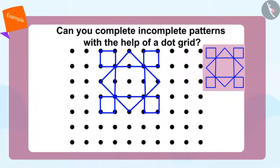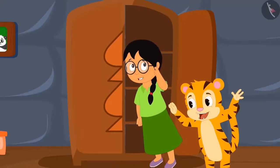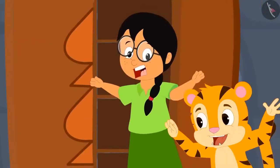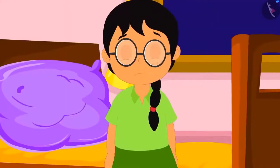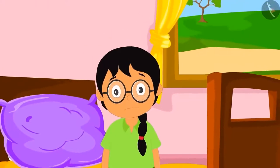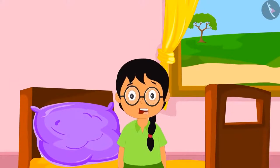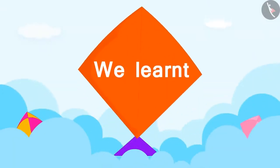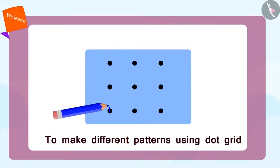Well done — you have completed it. Suddenly Shere Khan comes from behind and shouts, 'Boo!' Meenu suddenly awakens and sits up in her bed, getting scared. Meenu is relieved and says, 'Thank God that this was just a dream.' In this video we saw how different patterns can be made using a dot grid.